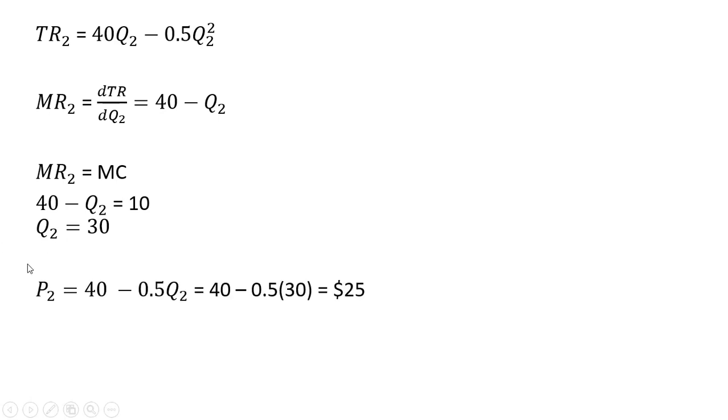And the price of those discounted units beyond 60 will be priced at $25 a piece. All I did here was took this 30 and I plugged it back into our price equation, this P subscript 2 price equation. So the discounted price here is going to be $25 for any units purchased beyond 60.